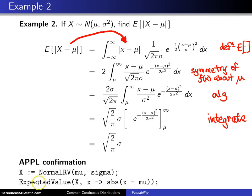That can be confirmed in APPL with the following statements. X is set equal to a normal random variable with parameters mu and sigma. Don't forget, you put in a sigma here, not a sigma squared. And then you call the expected value function with the random variable x, and the function x is the absolute value of x minus mu, and that will return the square root of 2 over pi times sigma.